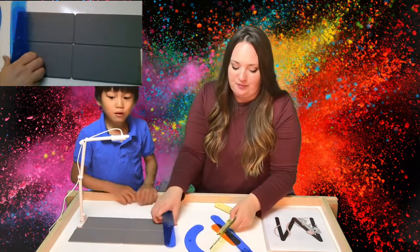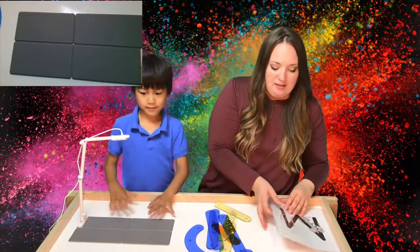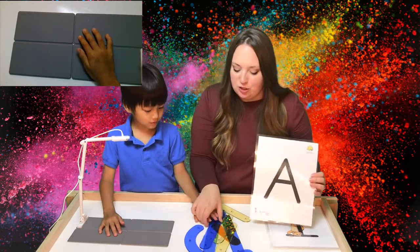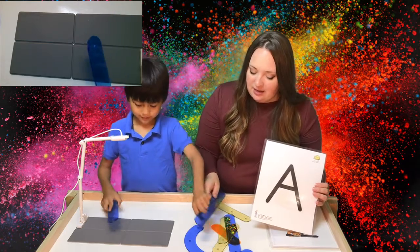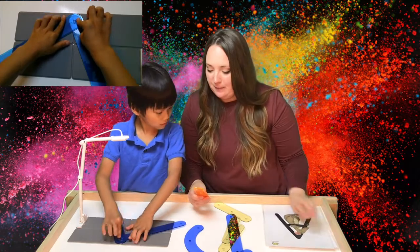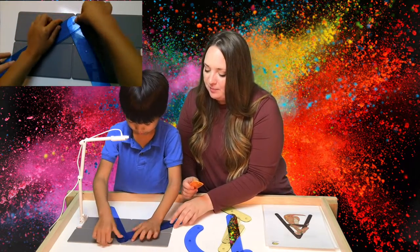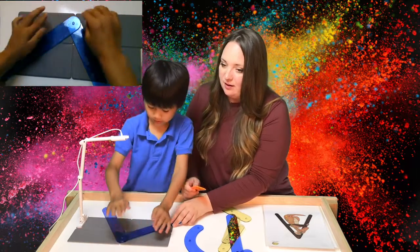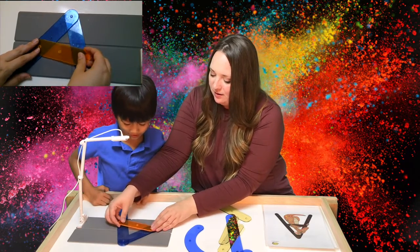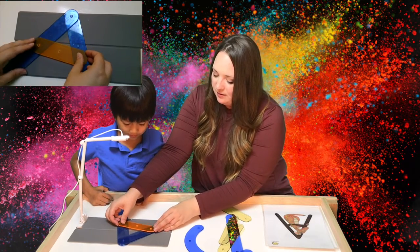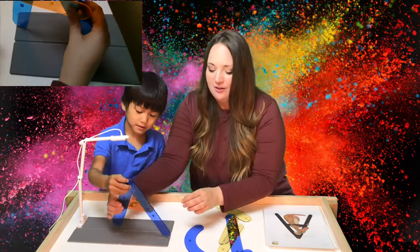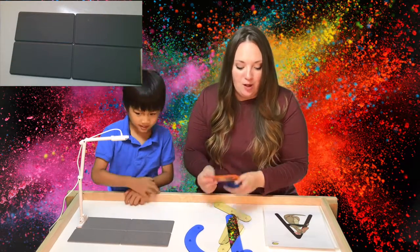Great work. Now let's make another letter. Let's make the letter A. So, for this one, we're going to need two long pieces and a little short piece. Nice job. Get it in there. There we go. A for alligator. Should we do another one?